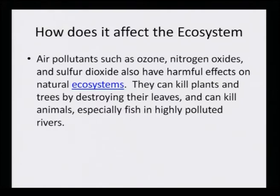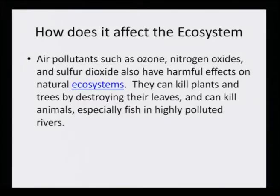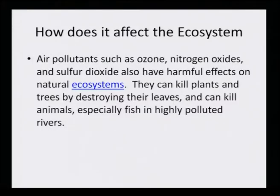Air pollutants also affect the ecosystem — it is not only human beings being affected. Air pollutants such as ozone, nitrogen oxide, and sulphur dioxide have harmful effects on the natural ecosystem. They can kill plants and trees by destroying their leaves and can kill animals, especially fish in highly polluted rivers. All living beings depend on some form of respiration, and if respiration does not take place normally it affects that part of the ecosystem. The more sensitive the plant or animal, the higher the effect.